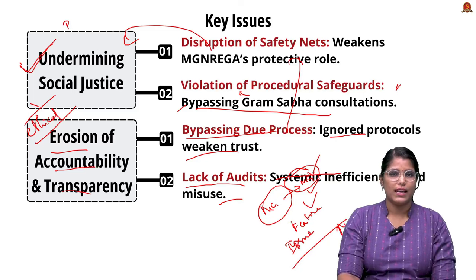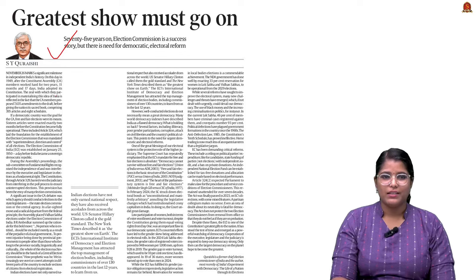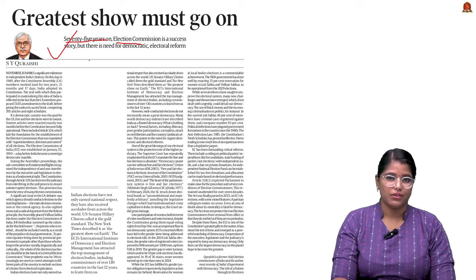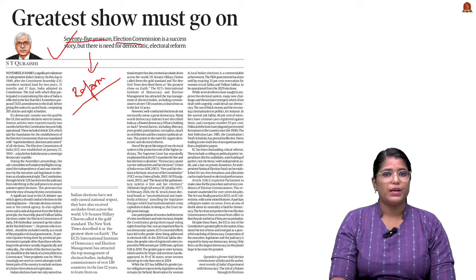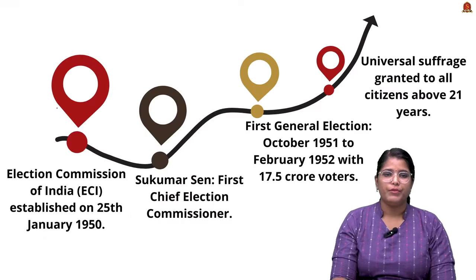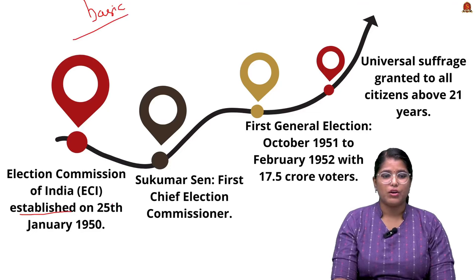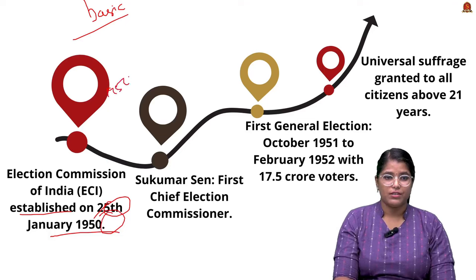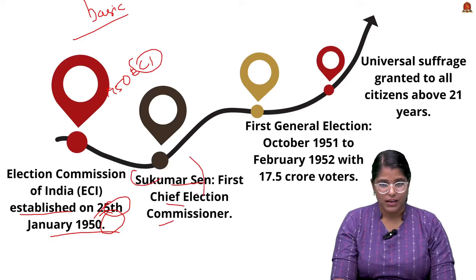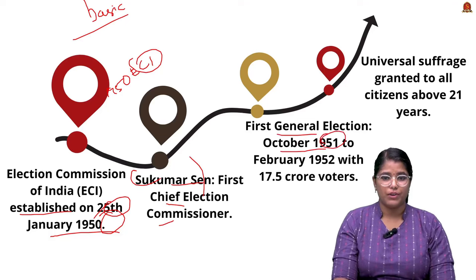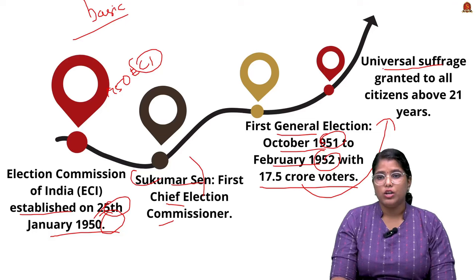Moving to the next article from the Indian Express, which talks entirely about the Election Commission of India and its excellent performance over the past 75 years, also suggesting certain reforms to streamline the institution. The Election Commission of India was established on 25th January 1950. The first Chief Election Commissioner was Mr. Sukumar Sen. The first general election was held between October 1951 and February 1952, with 17.5 crore voters participating with universal suffrage granted to citizens above 21 years.